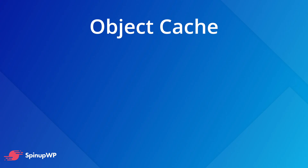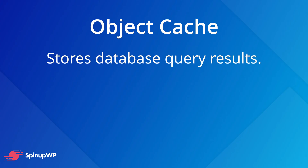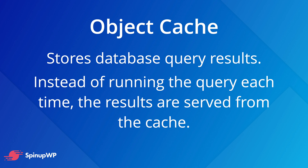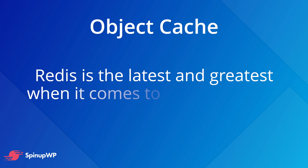Let's talk about object cache. An object cache stores database query results so that instead of running the query again the next time results are needed, they're served from the cache. This greatly improves WordPress performance as there's no longer a need to query the database for every piece of data required to return a response. Redis is the latest and greatest for object caching, though popular alternatives include Memcache and Memcached.